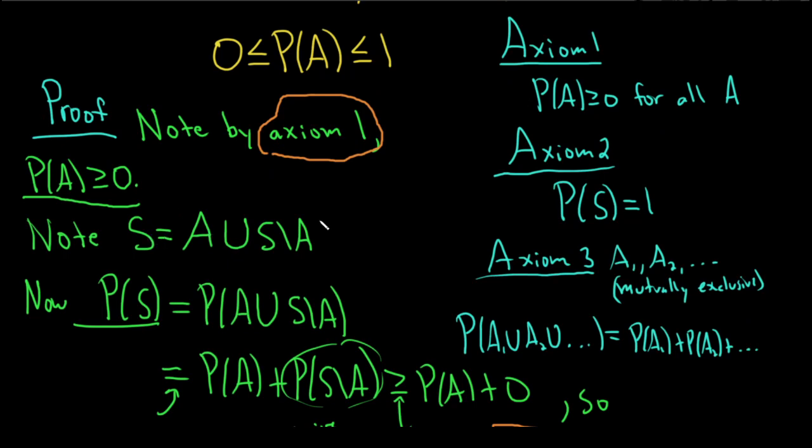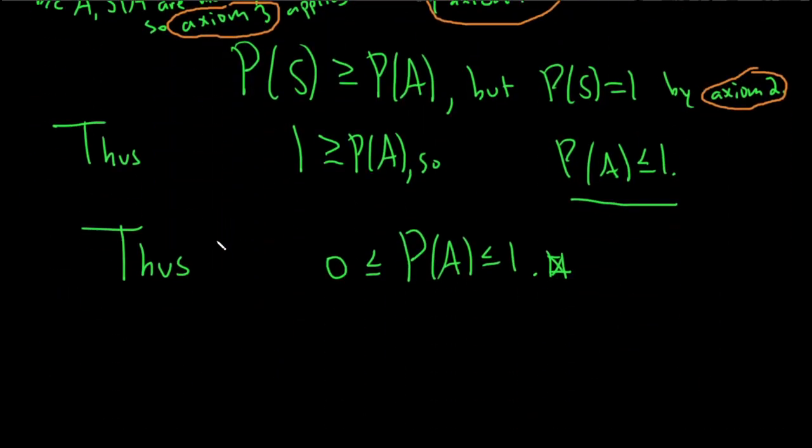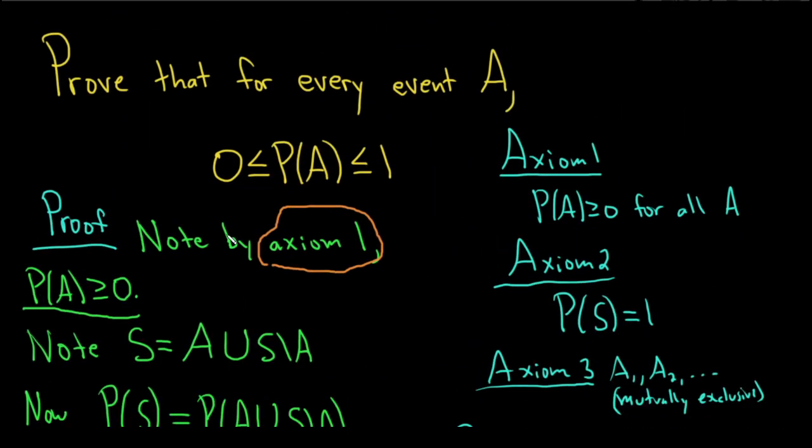And then a natural thing to do is create some mutually exclusive sets so that you can apply axiom 3 to all of this. Really, really nice problem. Yeah, I hope this video has been helpful to someone out there. Good luck and take care.